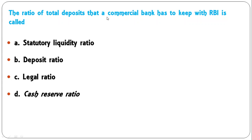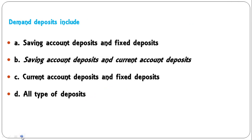The ratio of total deposit that a commercial bank has to keep with RBI is called — statutory liquidity ratio, deposit ratio, legal ratio, or cash reserve ratio? This ratio is known as CRR, or cash reserve ratio, in short. So D is the correct answer here.